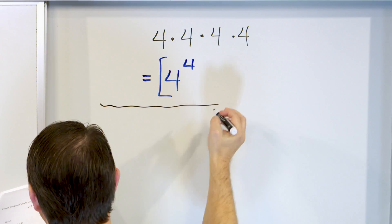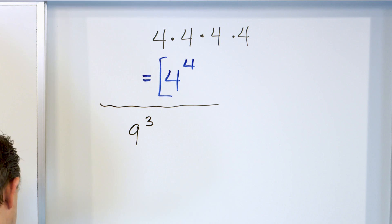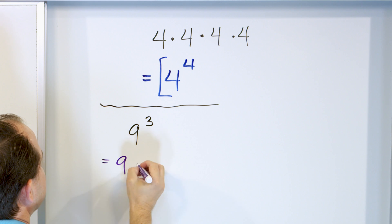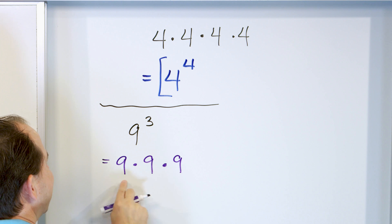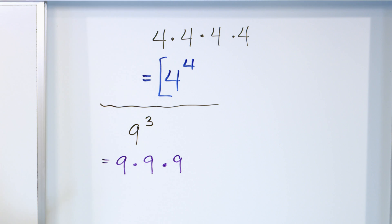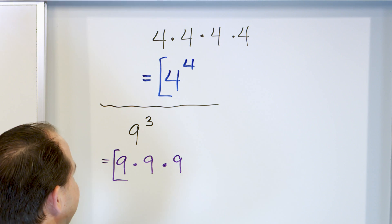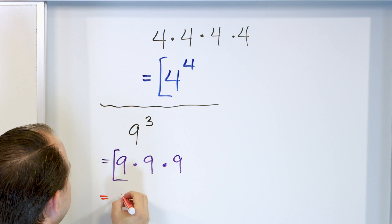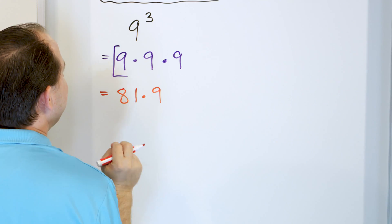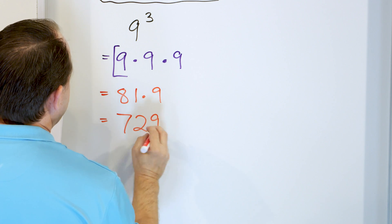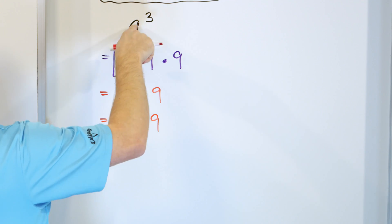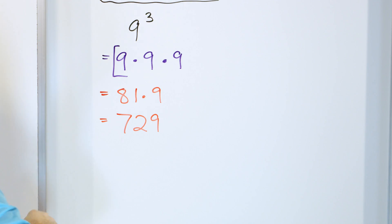What about nine to the power of three? Let's write it in terms of a product of factors. It'll be nine times nine times nine — three of them because it's nine cubed. Nine times nine is 81, and 81 times nine comes out to 729. So if you take nine to the power of three in your calculator, it will tell you 729.